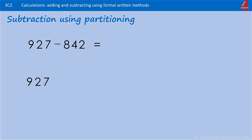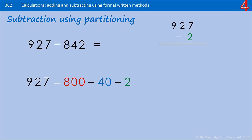927 — we're going to partition the 842: take away 800, take away 40, take away 2. Starting with taking away the 2: 927 take away 2 is 925. Now we're going to take away the 40. You might want to split this into two lots of 20 just to make it easier: 925 take 20 of that 40...